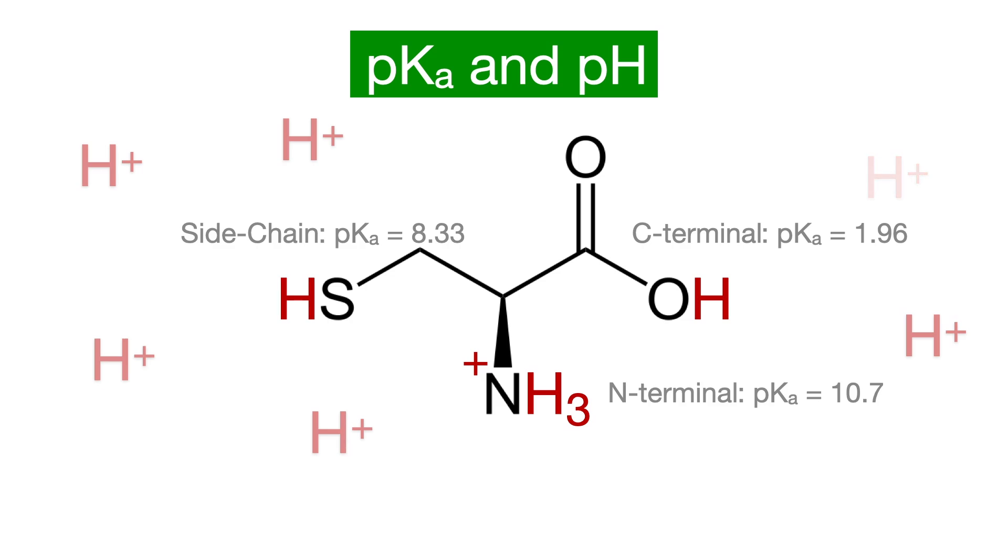So now, imagine the pH of the solution slowly increasing, like in titration. If the pKa of the C-terminus is 1.96, that means when the solution increases in pH, reaching a pH of 1.96, the carboxy terminus will be deprotonated, leaving behind a negative charge on the oxygen.